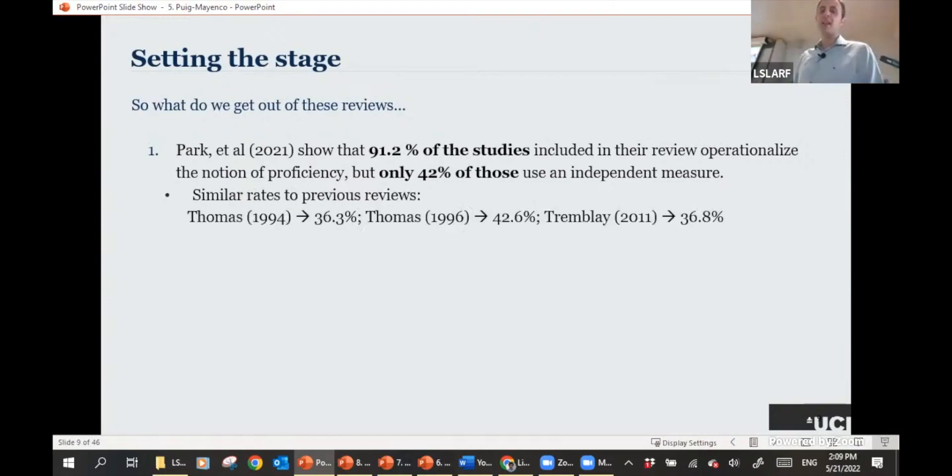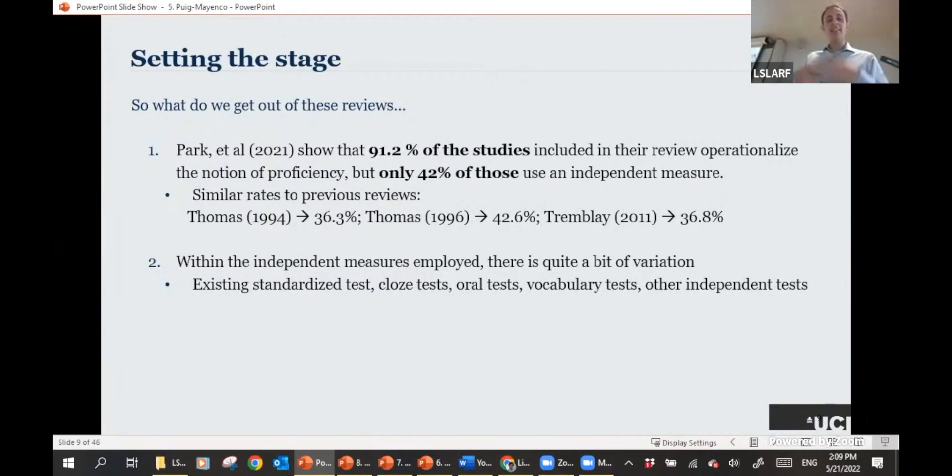What I do want to highlight is that out of these 91.2% of studies that use or talk about proficiency, only 42% of those use independent measures, so-called objective measures, which already gives us a lot of food for thought. And if we actually look at the four systematic reviews that give us an overview since the 80s to 2012, we see that the story hasn't changed much. We're at around 40% of studies using an independent measure of proficiency. And within the independent measures that have been employed, there is quite a bit of variation.